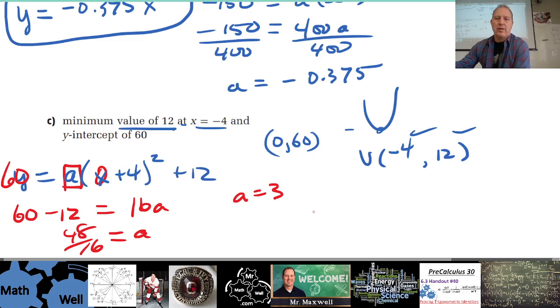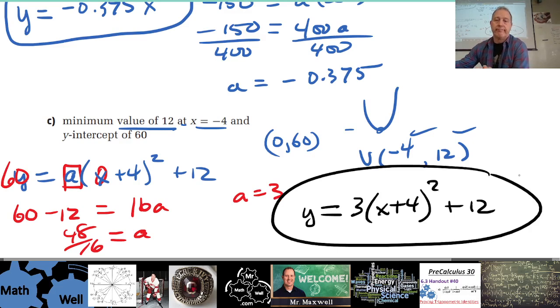It equals 3. Okay, so then our final answer would be then, so y equals, so we've got 3 here, we've got (x + 4) squared, and then plus 12.